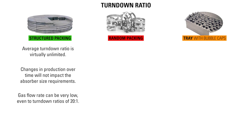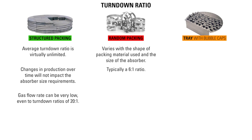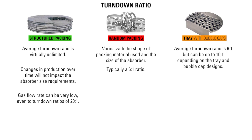The average turndown ratio for random packing can vary with the shape of the packing, material used, and the size of the absorber, but typically is a 6 to 1 ratio. In a tray tower with bubble caps, the average turndown ratio is 6 to 1, but can be up to 10 to 1, depending on the tray and bubble cap design.